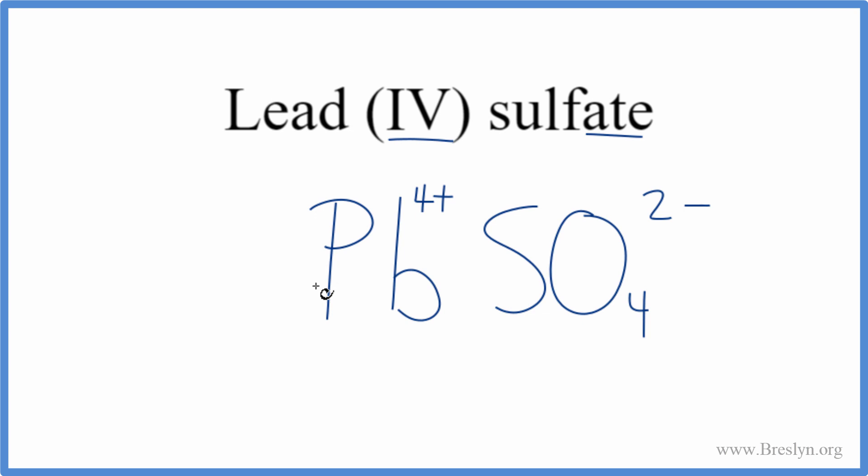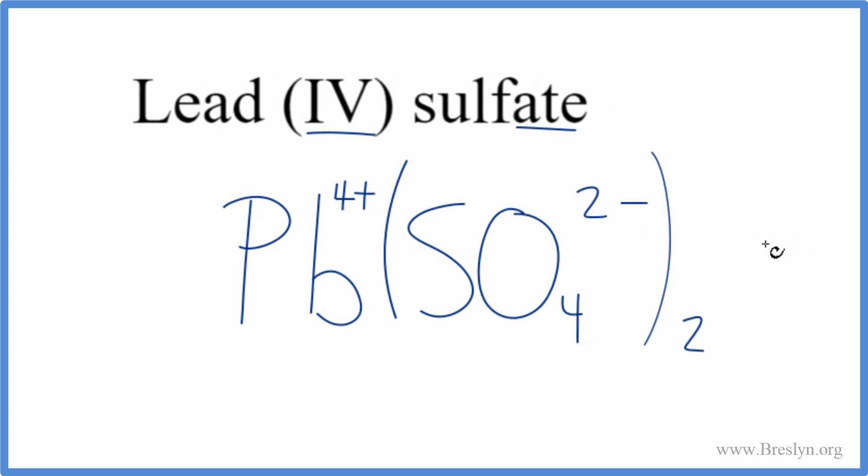So let's put parentheses around the sulfate, and then put a 2 out here. So 2 times the 2 minus, that's 4 minus, and then 1 times the 4 plus, that's 4 plus. So 4 plus, 4 minus, that adds up to zero.